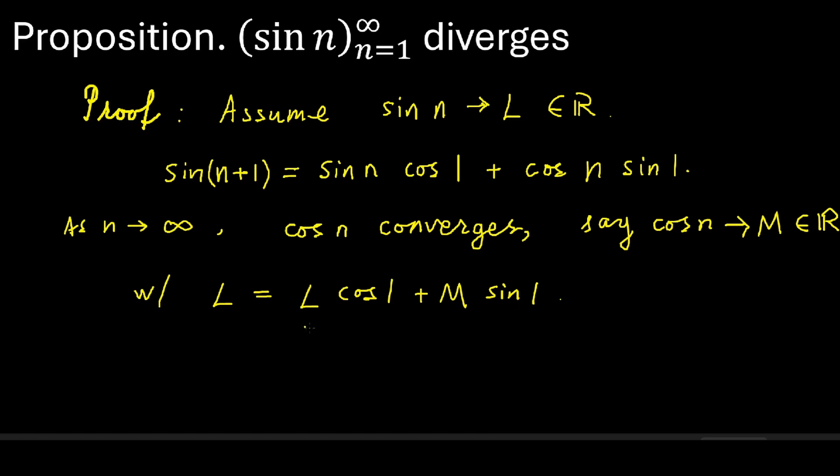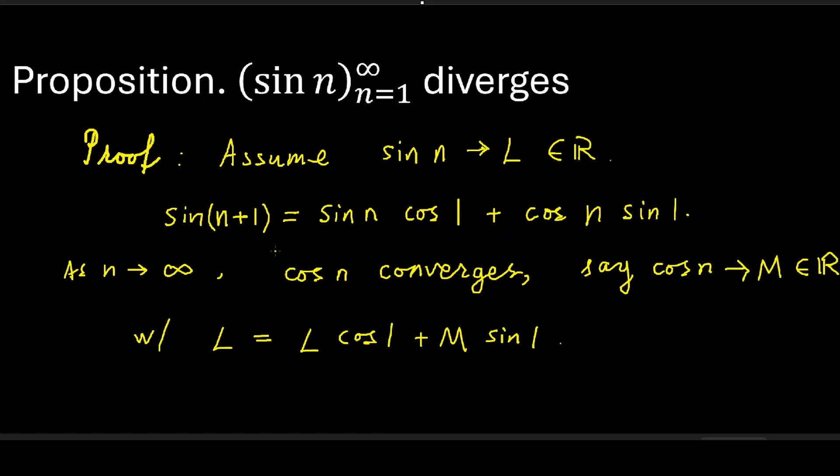So now we have an equation with two unknowns, L and M. We wish to derive another equation so we can determine them. For that, let's recall another trig identity.